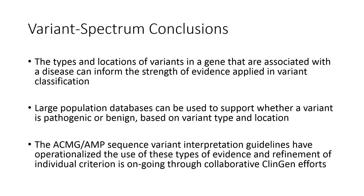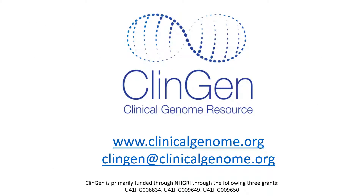To review, understanding the variant spectrum of a gene is an important step in variant interpretation. The types and locations of genetic variants that are known to cause a disease within a specific gene, based on a known disease mechanism, can inform the strength of evidence applied in classifying a novel variant. Large population databases can be used to support whether a variant is pathogenic or benign based on variant type and location. The ACMG AMP sequence variant interpretation guidelines have operationalized the use of these types of evidence, and refinement of individual criteria is ongoing through collaborative ClinGen efforts. I hope this has been a useful introduction into how variant spectrum evidence is incorporated into the ACMG AMP sequence variant interpretation guidelines. Please visit www.clinicalgenome.org for additional educational resources and to learn more about ClinGen initiatives.